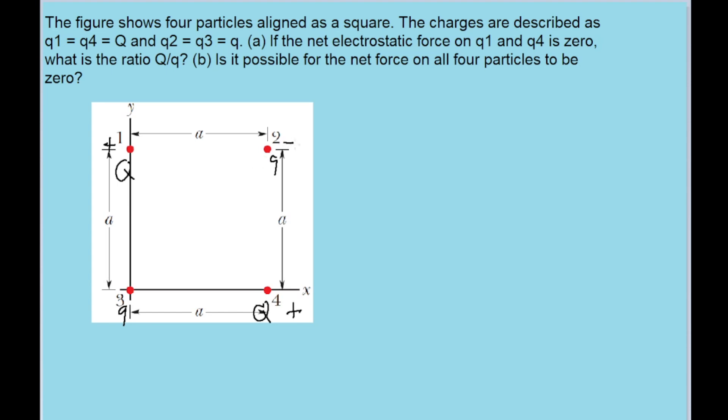If little q was negative and two and three were negatively charged, then those two charges would be pulling them back towards the square while those forces would be countered by charge four which is positive and would repel charge one away from the square. So right away we know for a fact that big Q and little q have opposite signs, which means that the ratio between them must be negative.